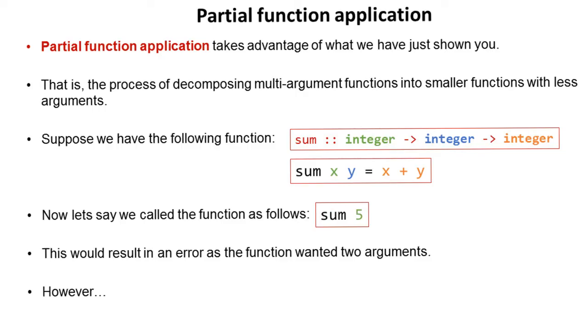Now let's say we called the function as follows: sum five. This would result in an error as the function is requiring two arguments and we've only given it one. However,